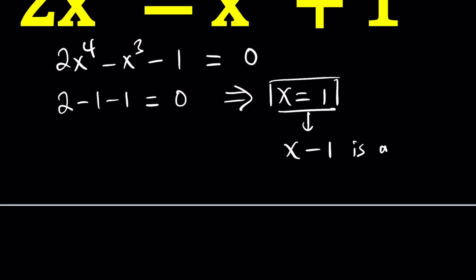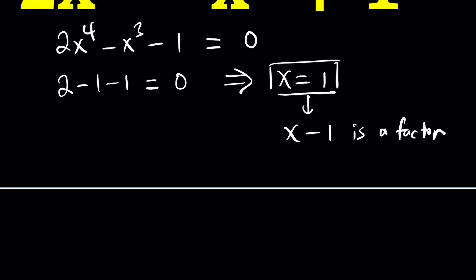So we can use the fact that x minus 1 is a factor to actually factor this expression. Once you know one of the factors, you can either do long division or polynomial division, or Horner's method, something like that. Anyways, but I'll show you an alternative, which is actually really cool.